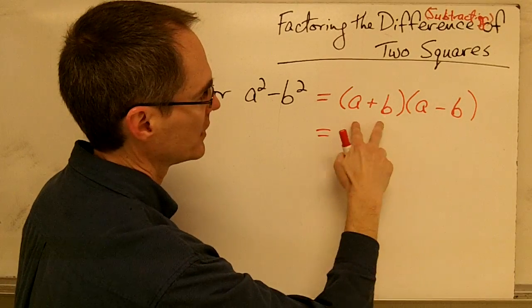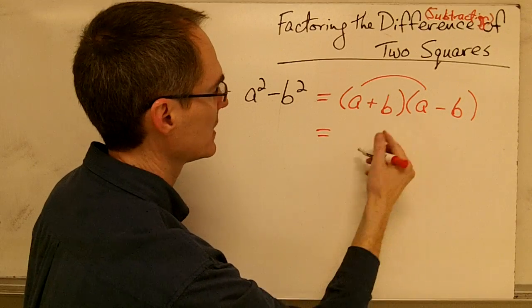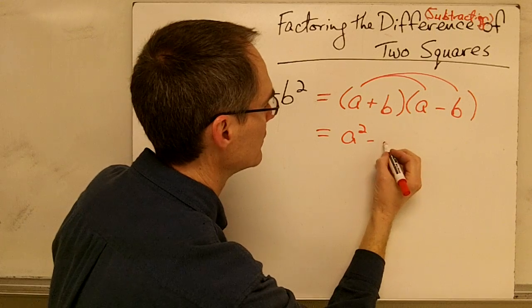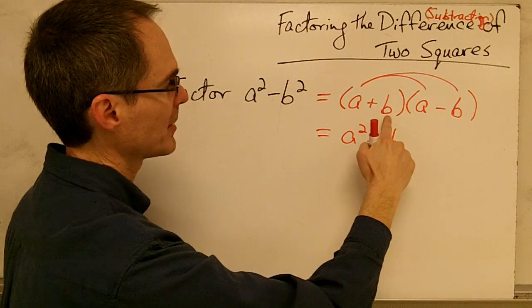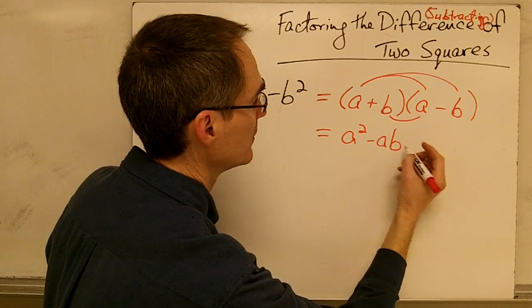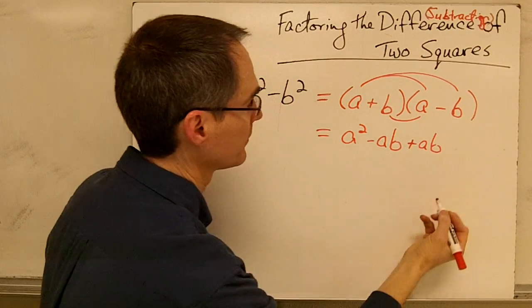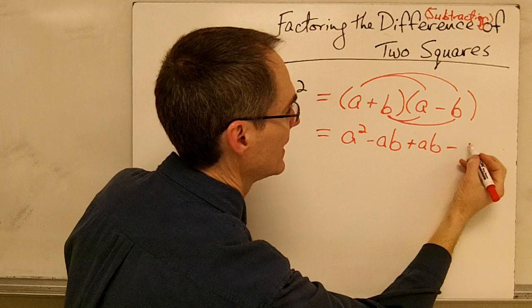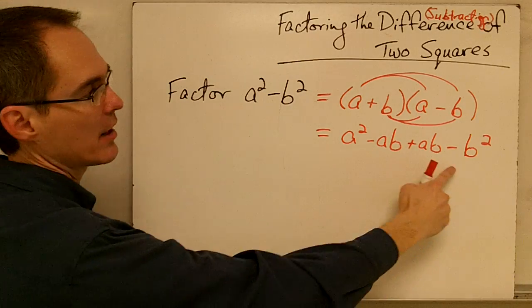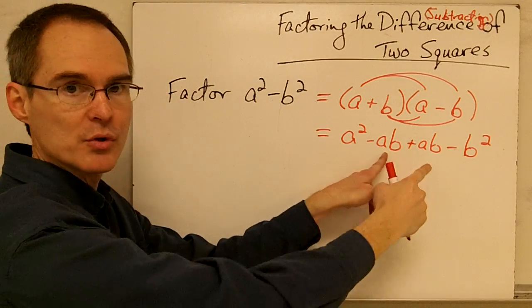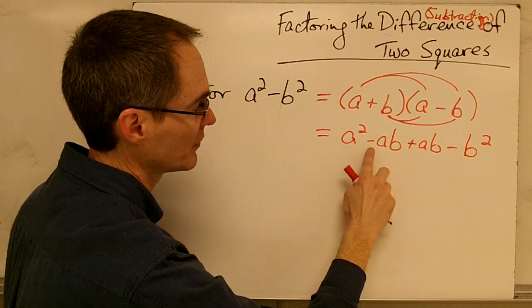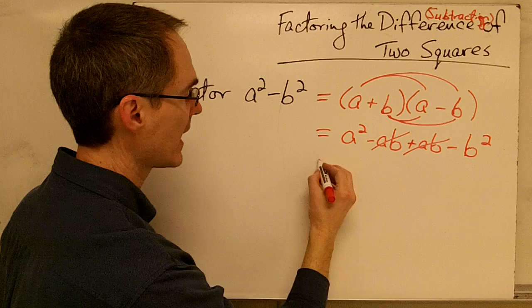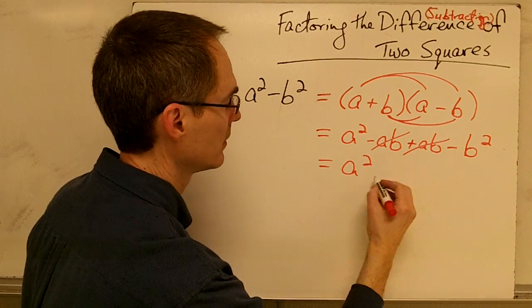Using FOIL on these two binomials: multiply the two first terms, a times a, giving a squared. Multiply the two outer terms, a times negative b, giving negative ab. Multiply the two inner terms, positive b and positive a, giving positive ab. Multiply the two last terms, positive b and negative b, giving negative b squared. The two middle terms, negative ab and positive ab, cancel each other out, and we're left with a squared minus b squared.